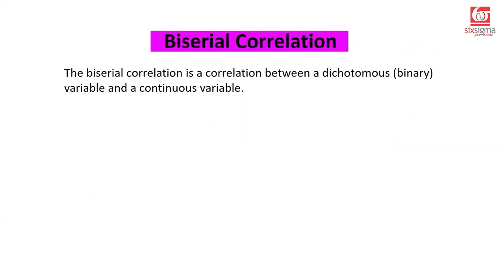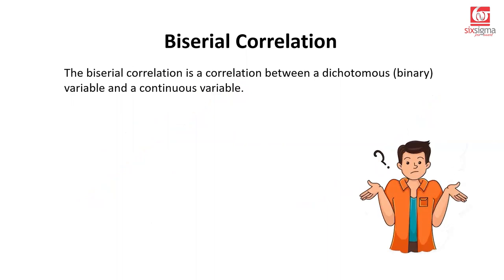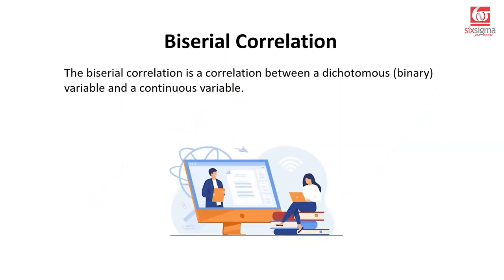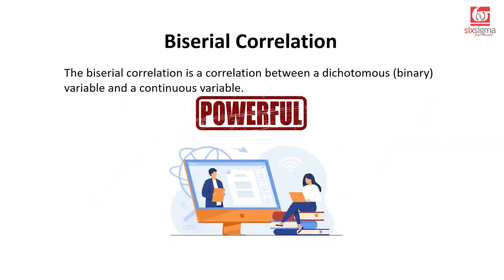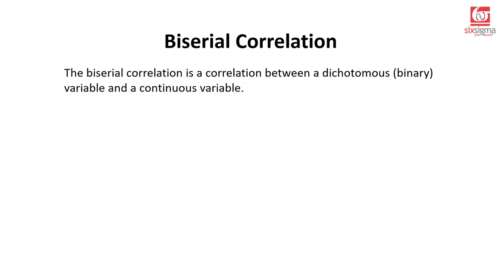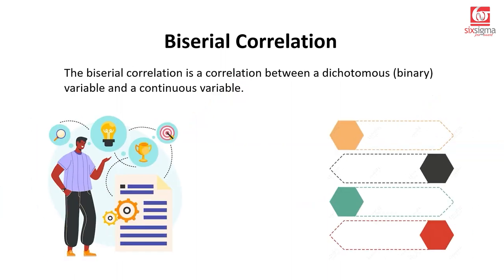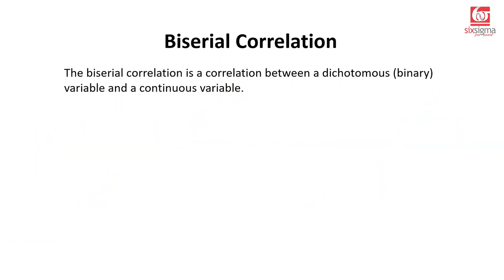Let's move on to bi-serial correlations. A bi-serial correlation is a correlation between a dichotomous variable — that's a binary variable — and a continuous variable. This is less known and taught in a lot of courses, but it is very, very powerful because a lot of times when you're dealing with a problem, your target column might be a binary variable.